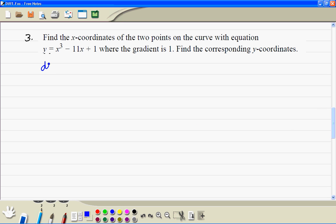Question 3. This is the equation of the gradient and the gradient is equal to 1, so we put this equal to 1. Then we add 11 on both sides so we get 3x squared is equal to 12, divided by 3 so x squared is equal to 4.